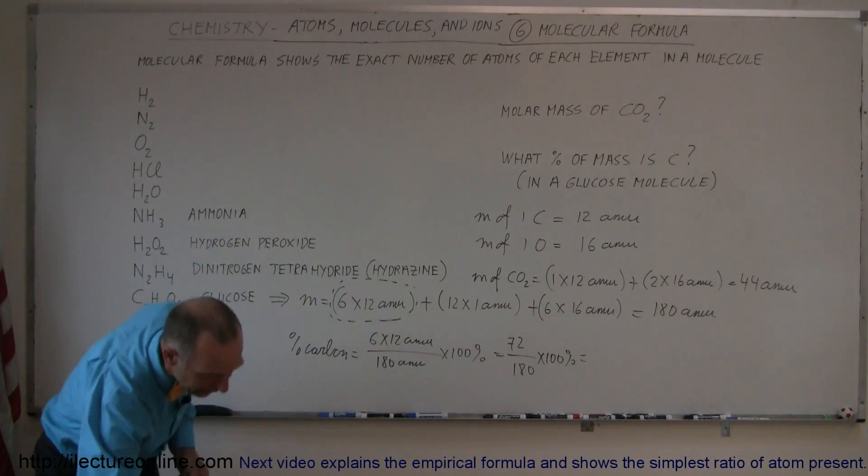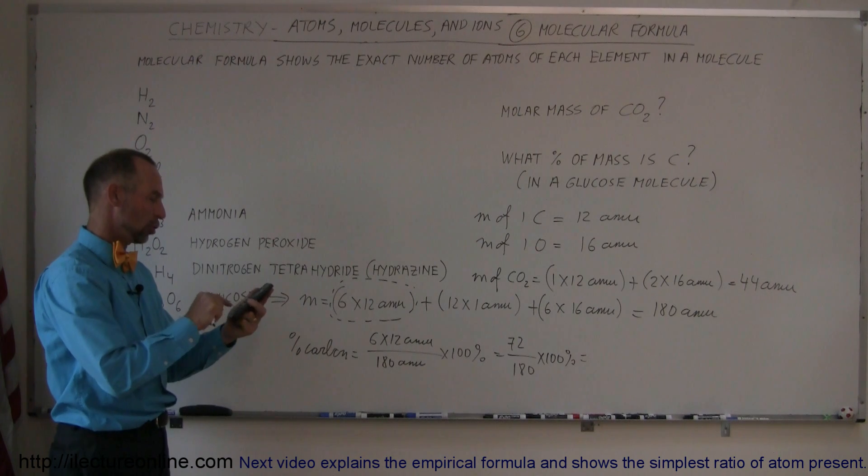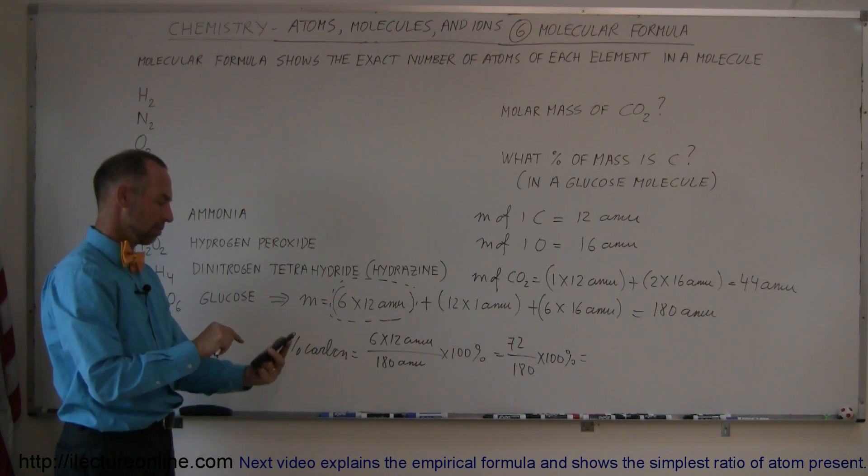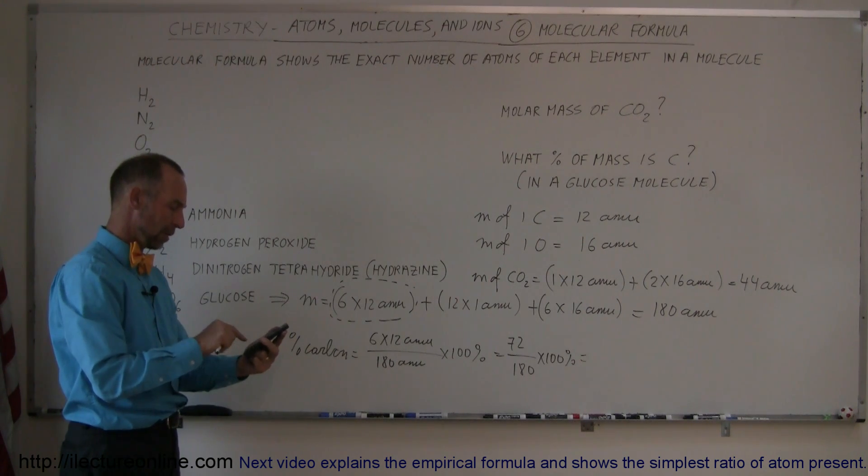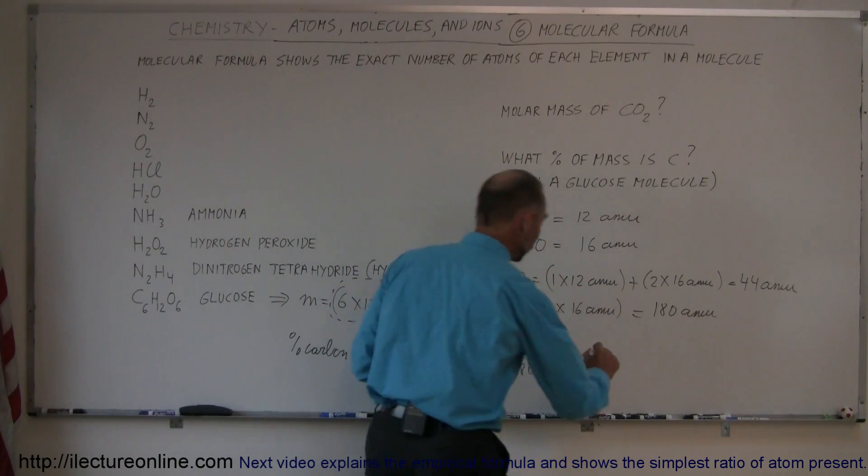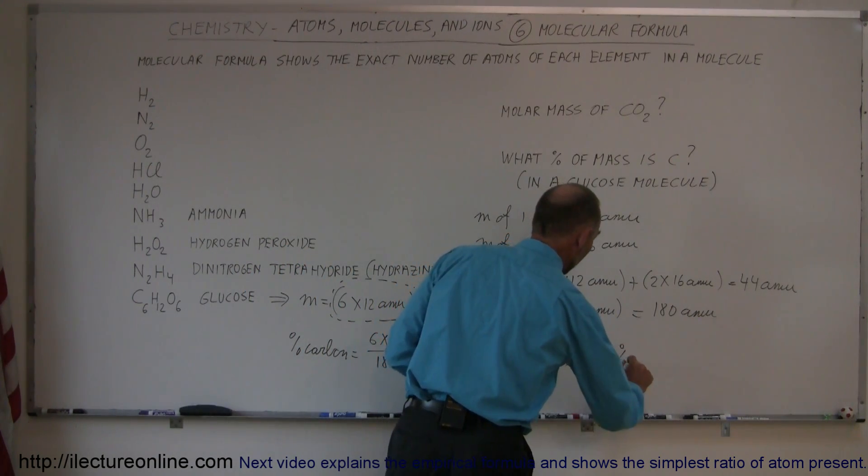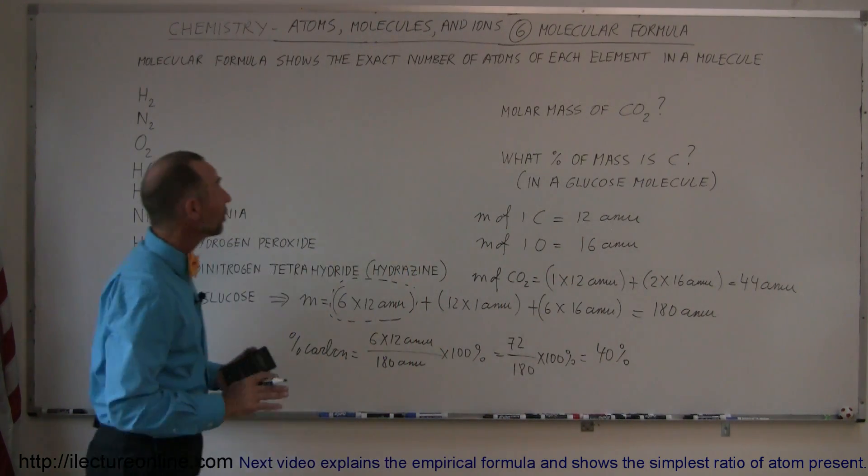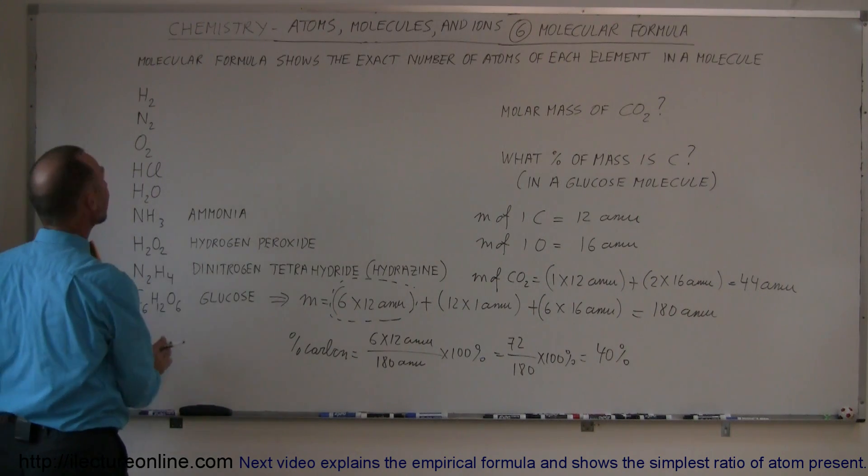And of course, what is 72 divided by 180? Let's see here, 72 divided by 180, that's the wrong one, so 72 divided by 180 equals, and it shows up as 40%.